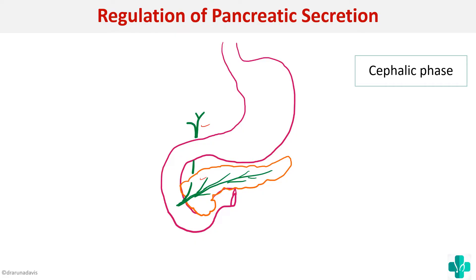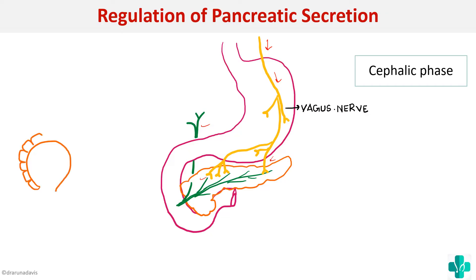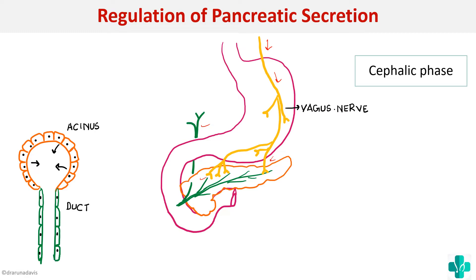The first phase is the cephalic phase, which means when we see, have the thought of, or smell food, there will be increased secretion of pancreatic juice. The mediator is the vagus nerve, just like in gastric secretion. The dorsal vagal complex will be activated, which in turn will send impulses via the vagus nerve to produce increased secretion. The pancreas has an acini part as well as a duct part. The vagus basically increases the secretion of the acini, so the secretion stimulated by vagus will be enzyme-rich.